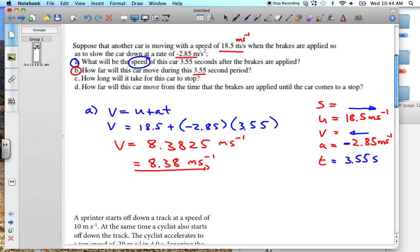How far will this car move during 3.55 seconds? So now we want to find S. We've got U, we've got A, and we've got T. We can use B. S is equal to UT plus half AT squared. You see how we use what we've got? We see what we want to find, and we pick the right formula.